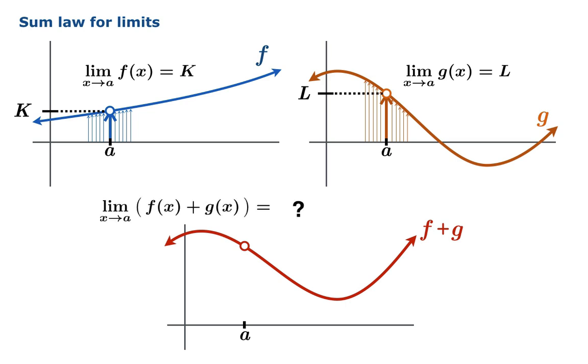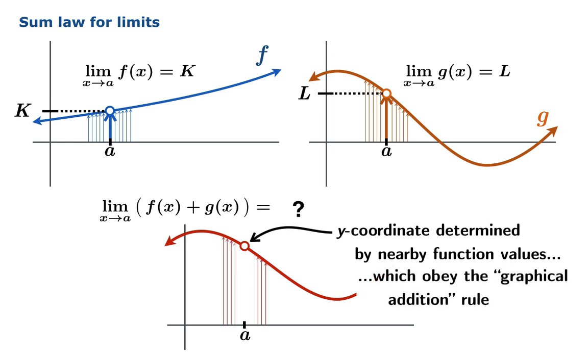What's this limit of the sum? The y-coordinate is determined by nearby function values. But those nearby function values obey the graphical addition law. It makes sense to imagine that this limiting value also comes along for the ride like a bubble on a wave. It's being carried by the graphical addition rules nearby. So the limit we're looking for is the sum of the two limits. It's k plus l.